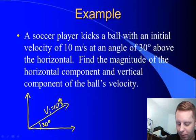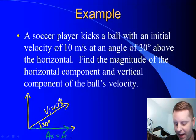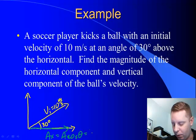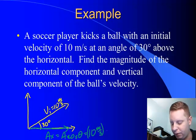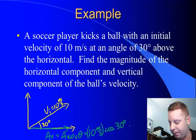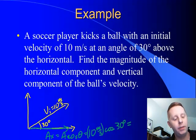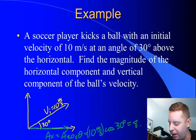Well, to find its horizontal component here, Ax, that's going to be A cos theta, or 10 meters per second. Notice that I'm substituting in with units, 10 meters per second, times the cosine of 30 degrees. Plug that into my calculator and I get something right around 8.7 meters per second. So we found its horizontal component.